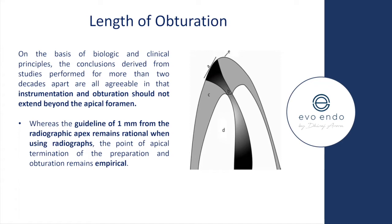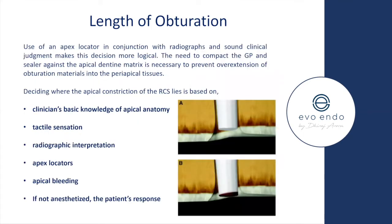The principle was to not extend preparation or obturation beyond the apical foramen. We now know it's not necessary for the apical foramen or constriction to be placed within one millimeter, and sometimes when you think you're at the apex, you may not be. You obturate to where you've finished your preparation, and there are several things to help determine where to terminate.